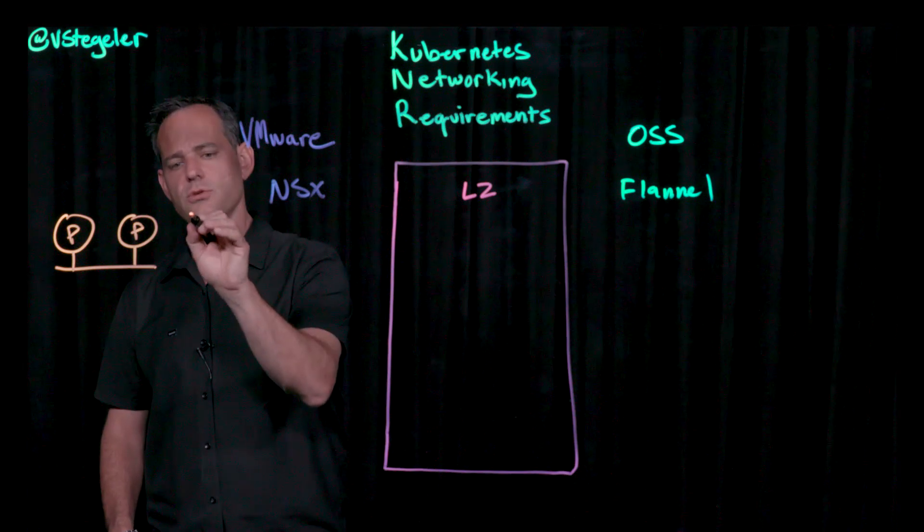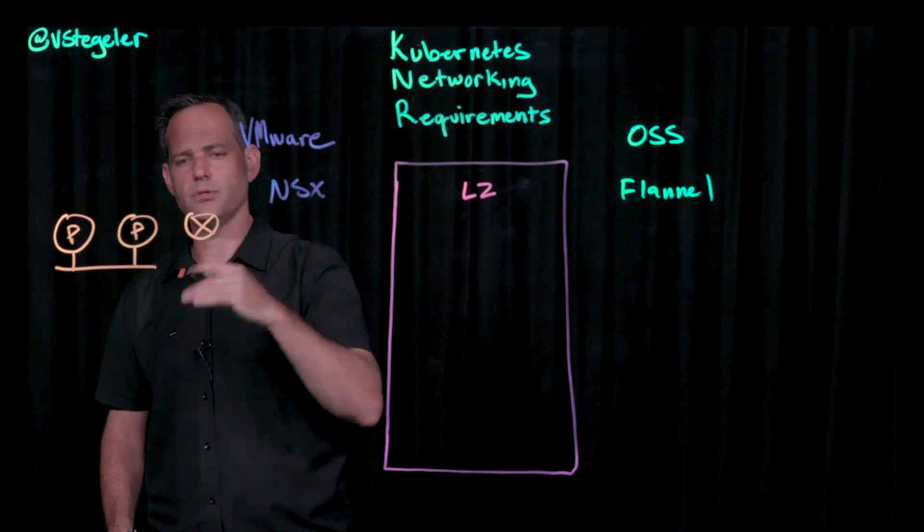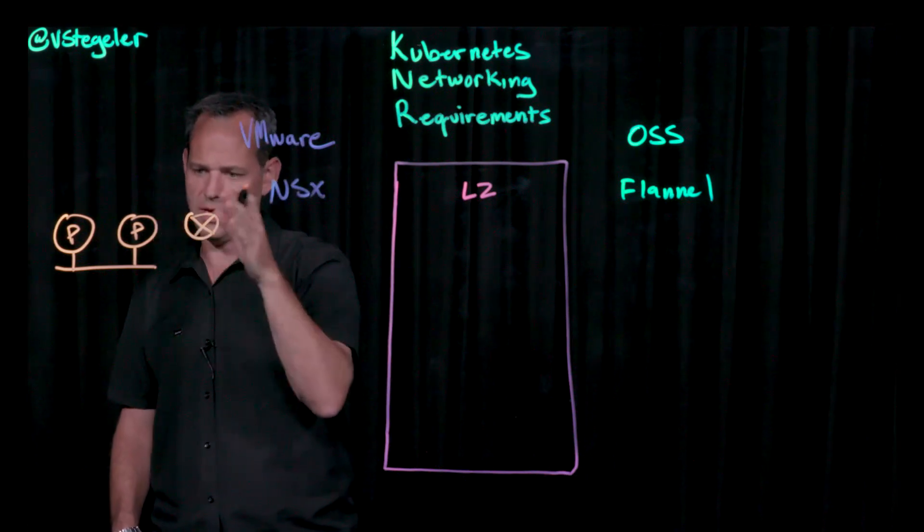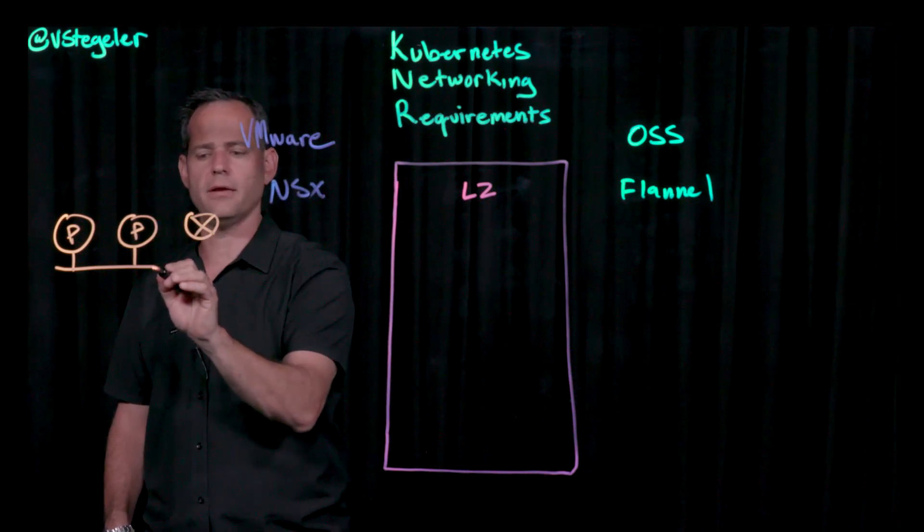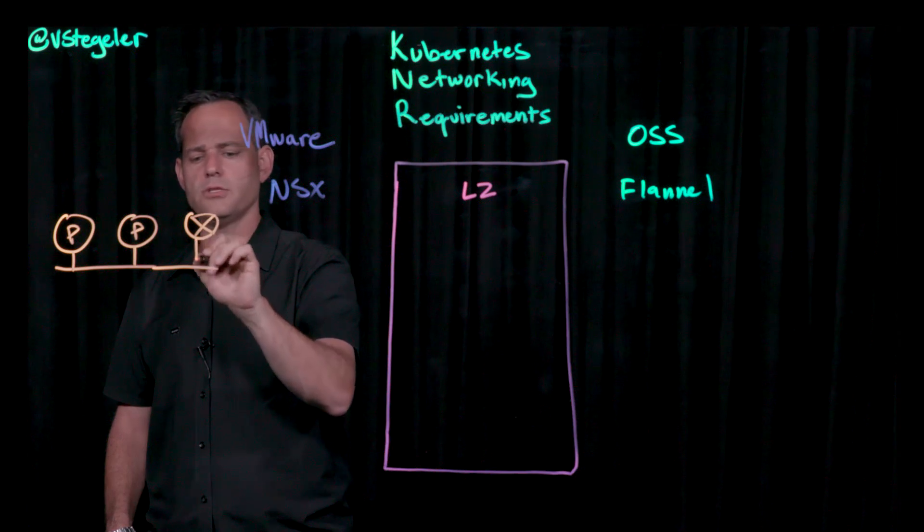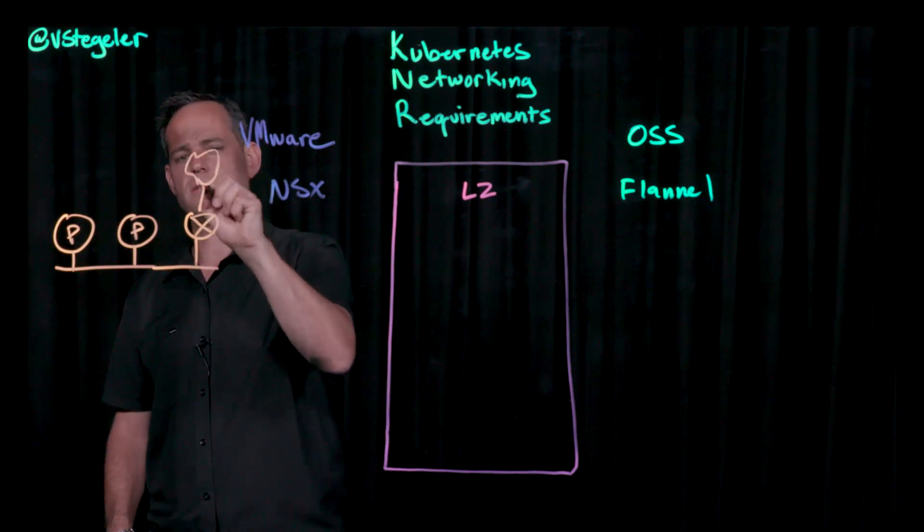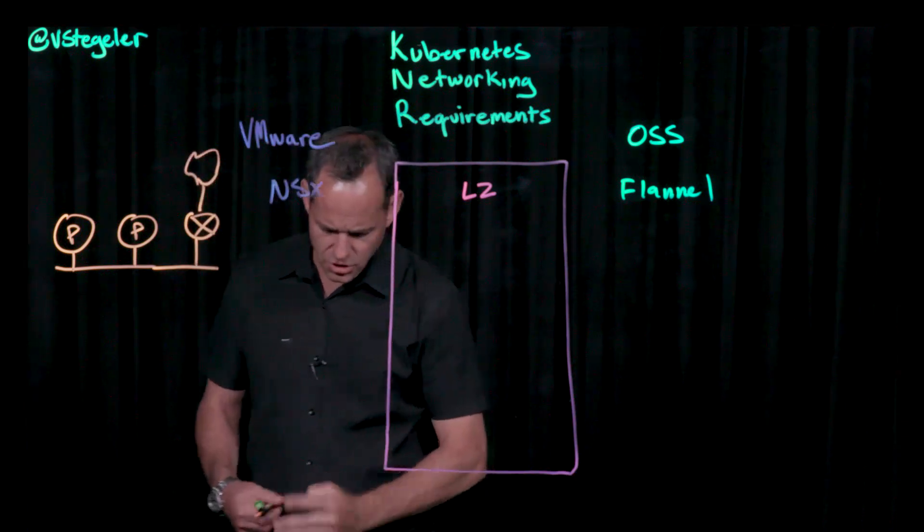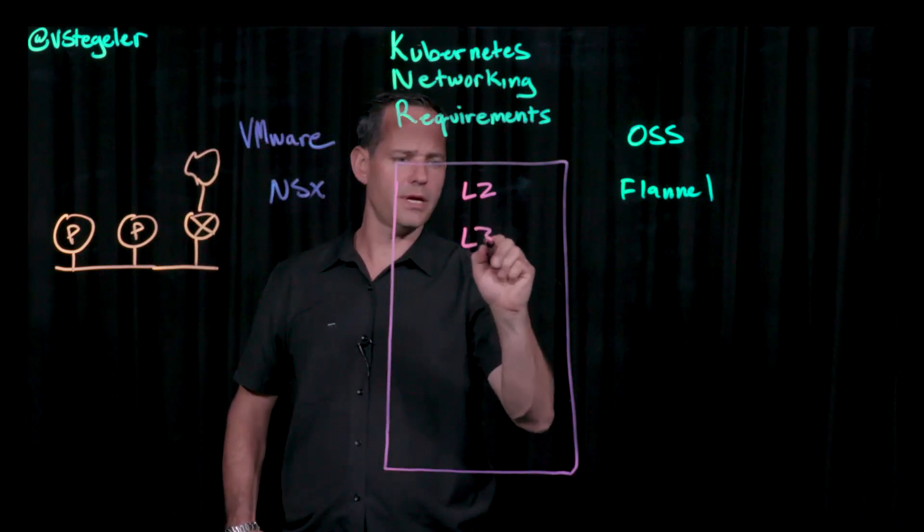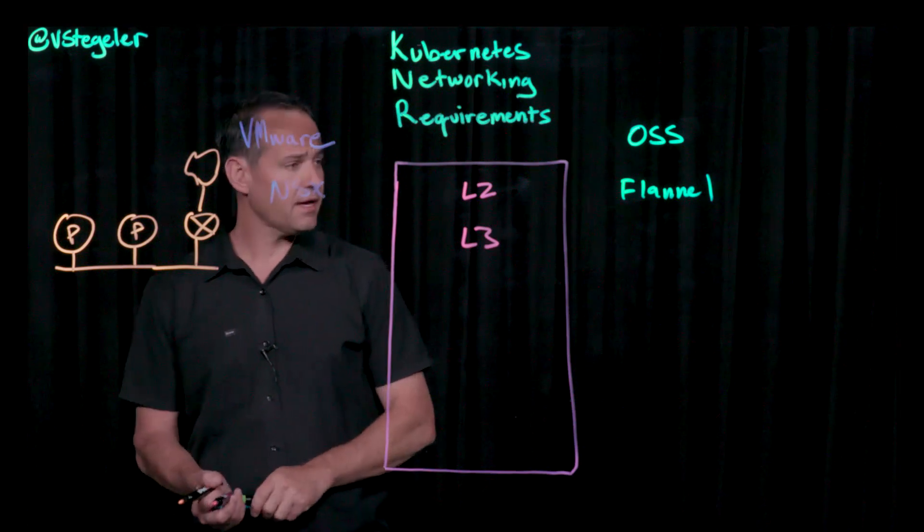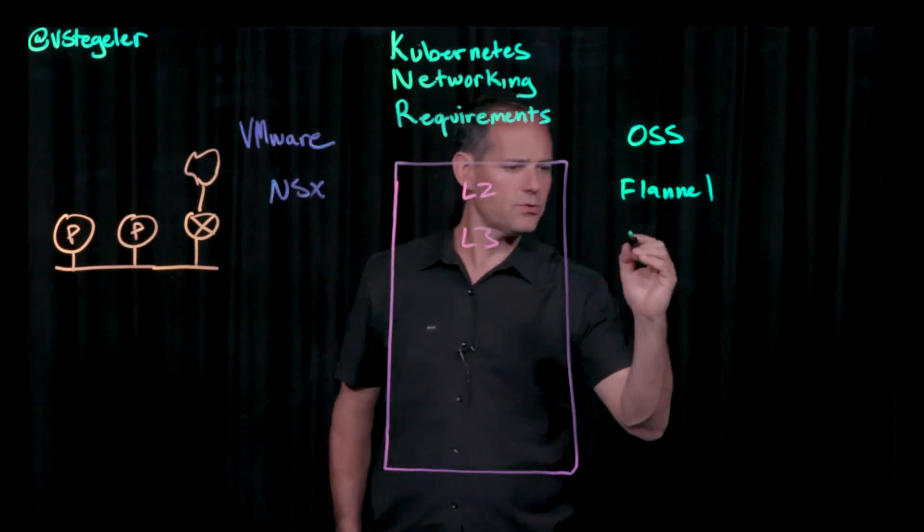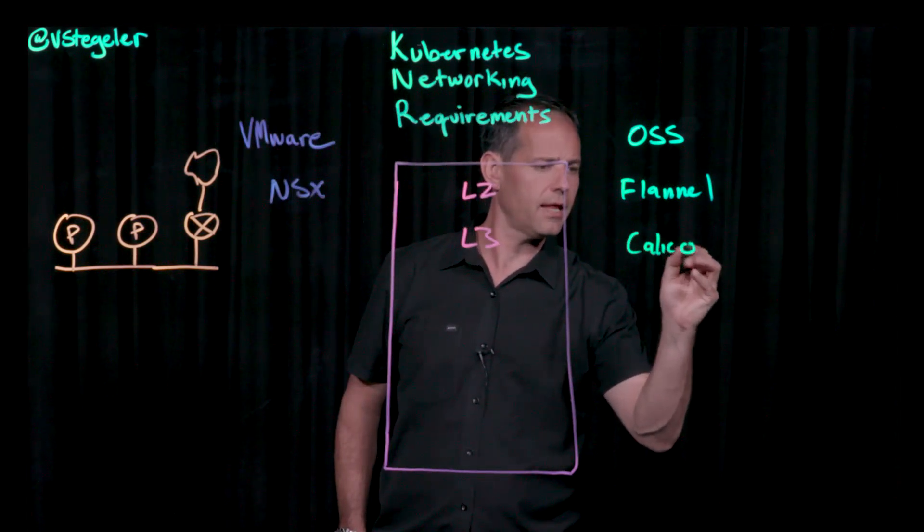But normally what you'll need to do is you'll need to get out. You'll need some north-south traffic in and out of the cluster and out of the network for these pods. So what I'll have to do is provide some north-south connectivity and then it goes out to some network somewhere. And so we call that layer three connectivity.